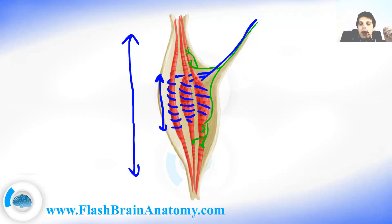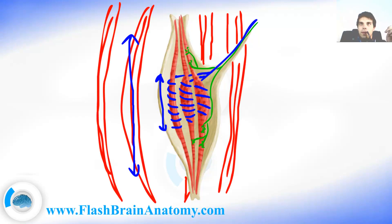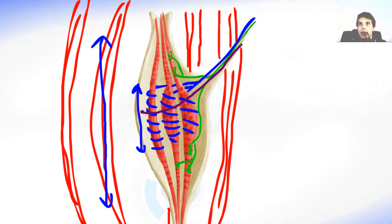When the extrafusal muscle fibers are stretched, the intrafusal muscle fibers stretch too, because they are attached to the intramuscular connective tissue. As they stretch, a higher rate of impulses comes from the primary and secondary nerve endings.